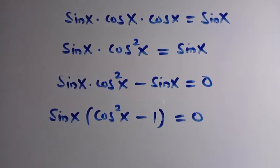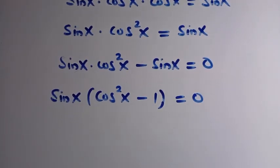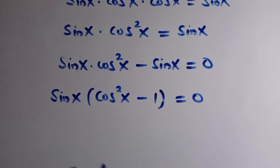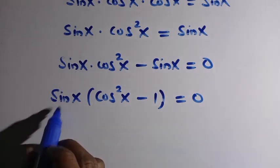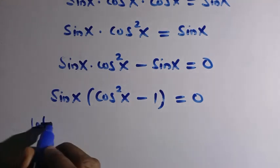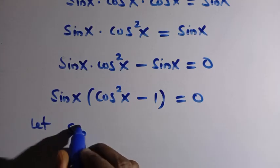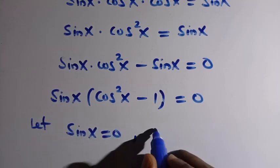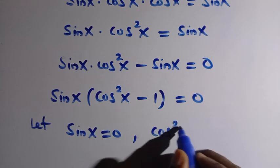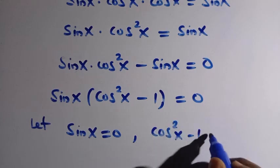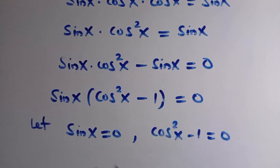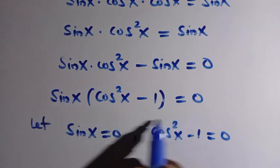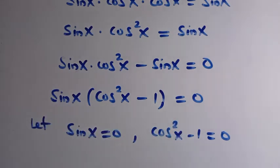Following the rule of algebra, we now have two cases. We let sine x equals zero, and we also let cos squared x minus 1 equals zero. Since sine x here is not being canceled, we must set each factor equal to zero separately.